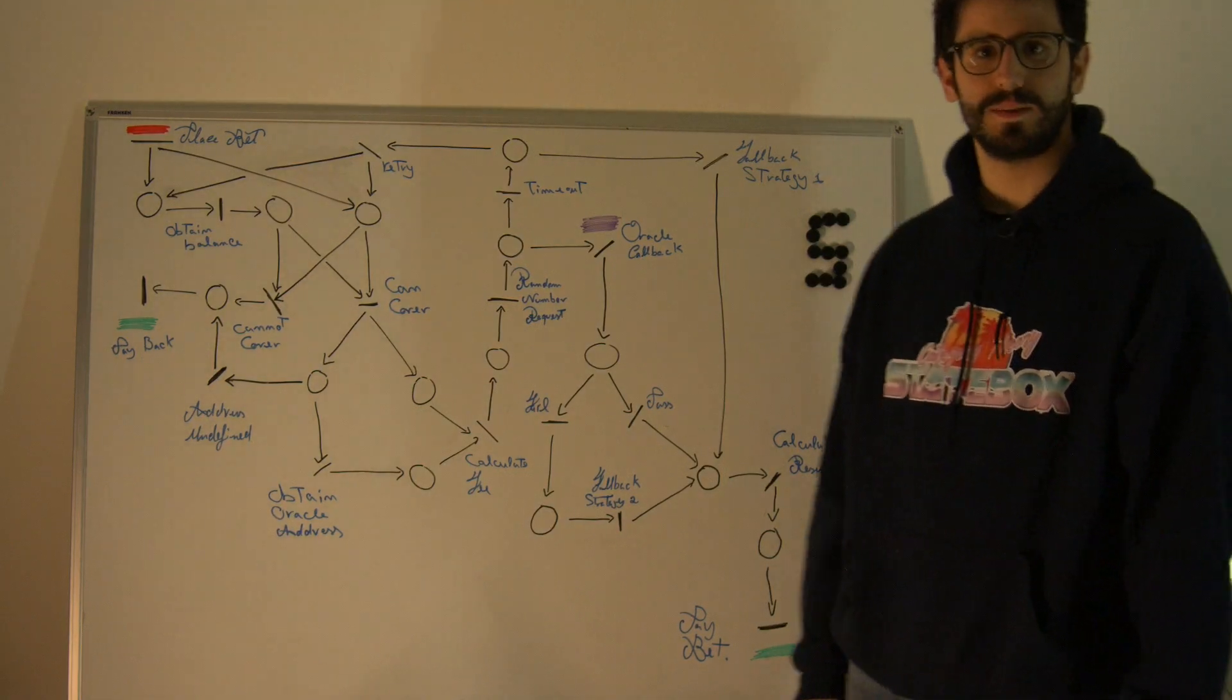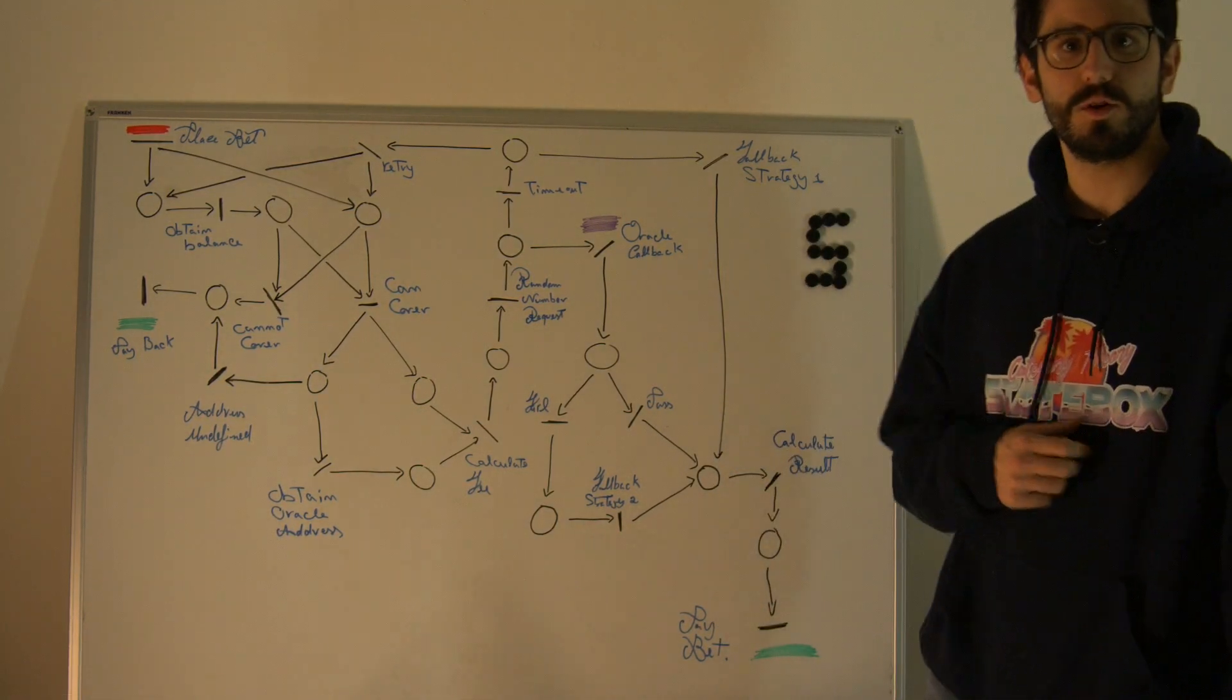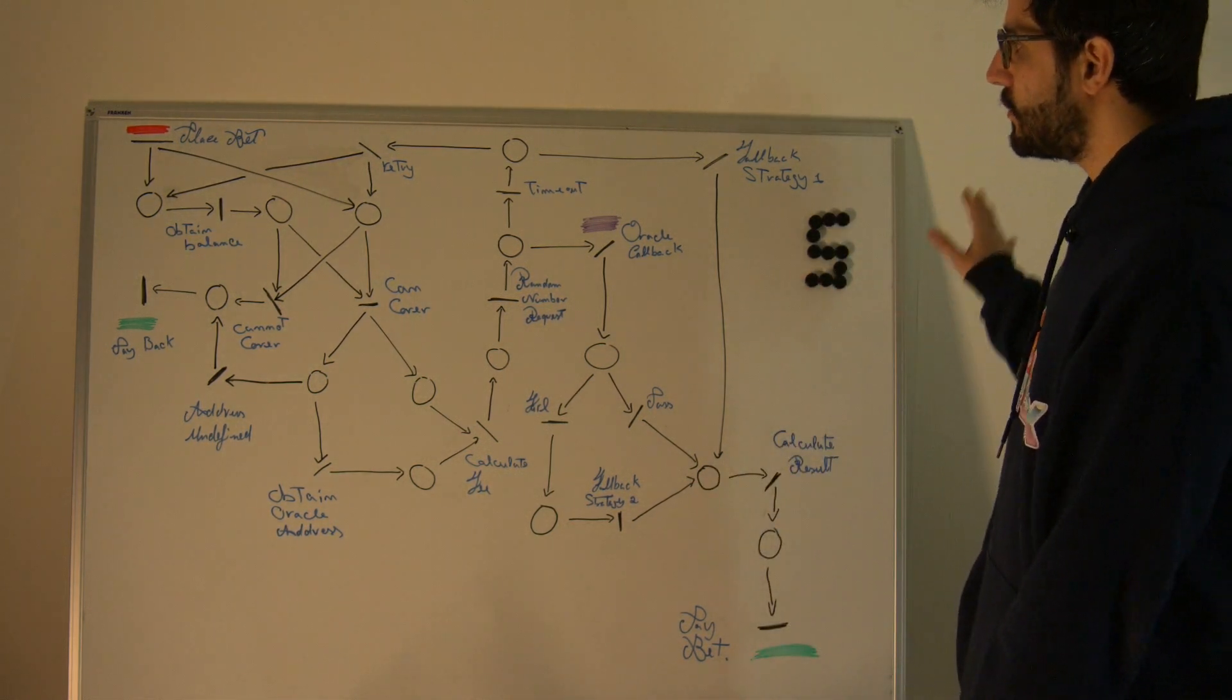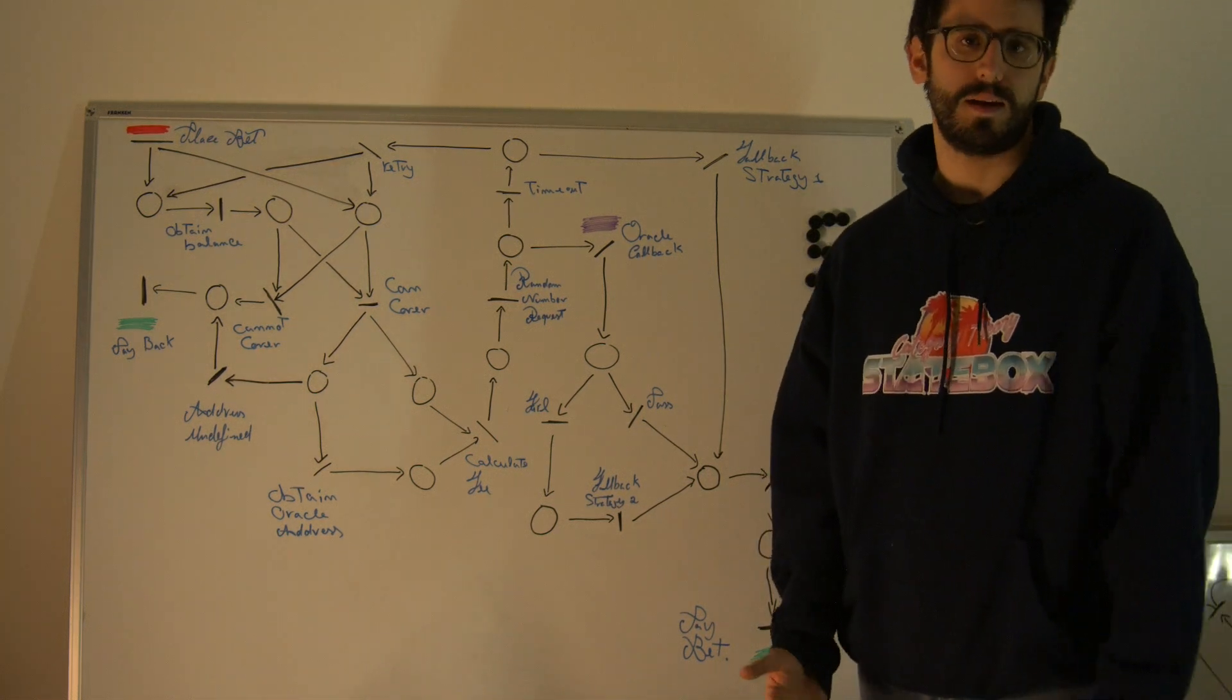Hello everyone, Fabrizio from Statebox here. In the previous video I showed you how to model the Dining Philosophers problem using Petri nets. This time we are looking at a slightly more complicated example.